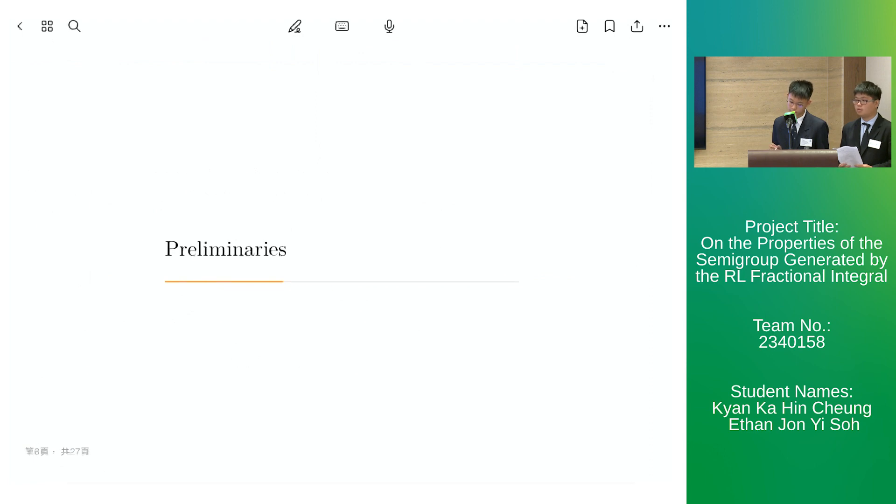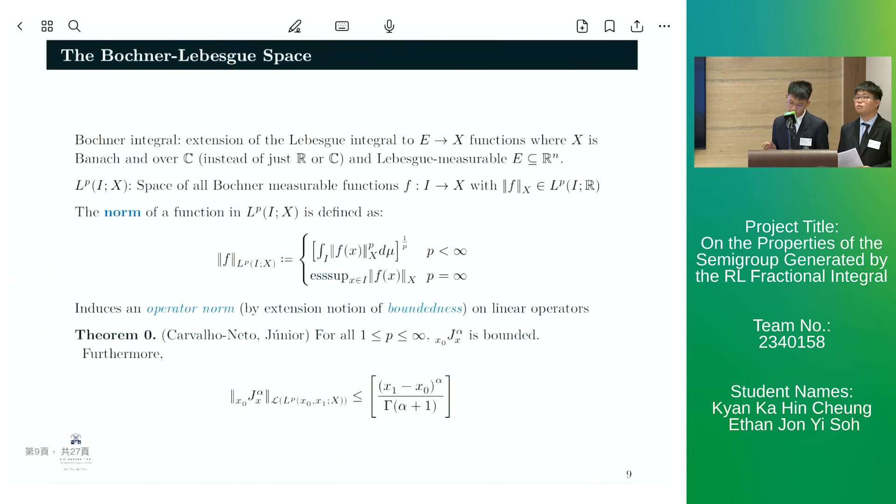We now move on to some preliminary results. Firstly, the Bochner-Lebesgue integral is an extension of the Lebesgue integral to functions mapping from a Lebesgue-measurable subspace of R^n to an arbitrary Banach space X. The Lp-Bochner-Lebesgue space is the set of all Bochner-measurable functions F, such that the norm of F on X is in the Lp-Lebesgue space.